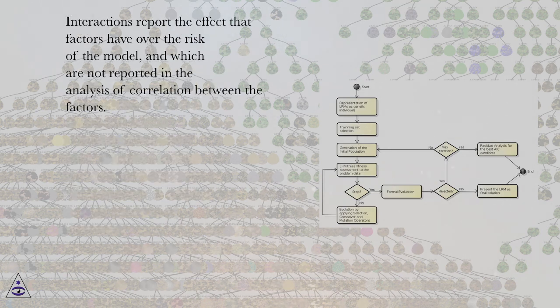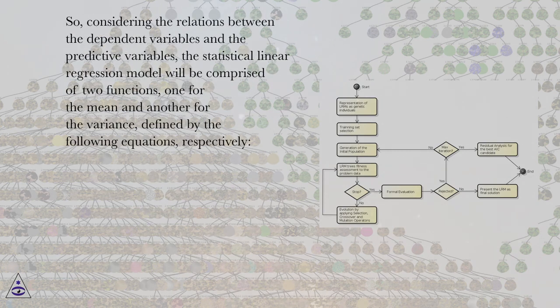Interactions report the effect that factors have over the risk of the model, and which are not reported in the analysis of correlation between the factors. So, considering the relations between the dependent variables and the predictive variables, the statistical linear regression model will be comprised of two functions, one for the mean and another for the variance, defined by the following equations, respectively.